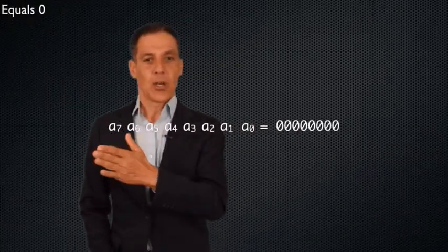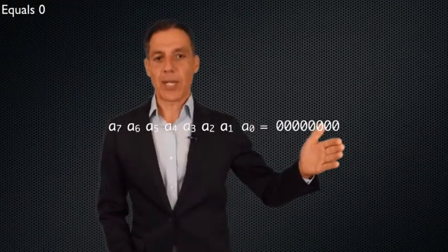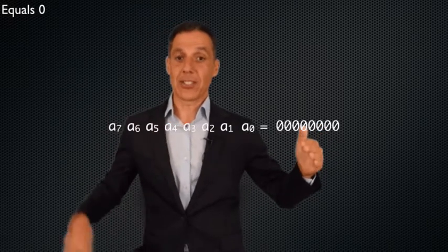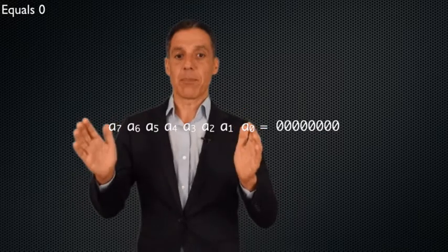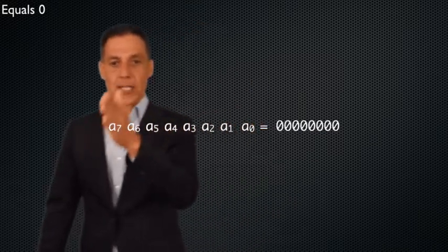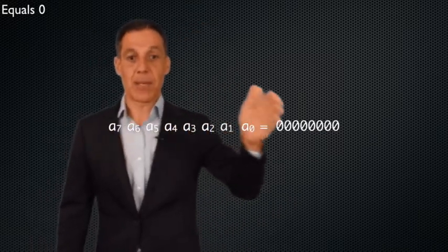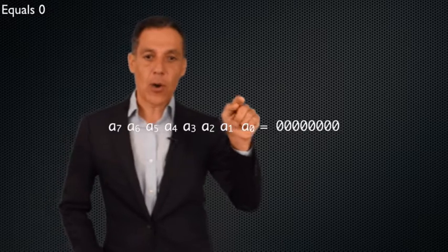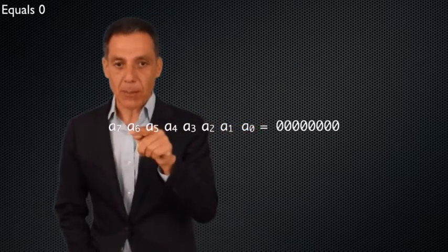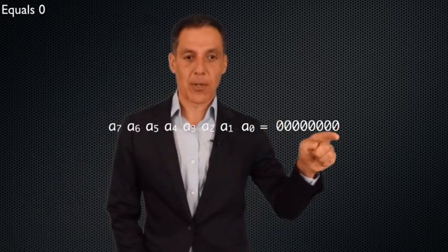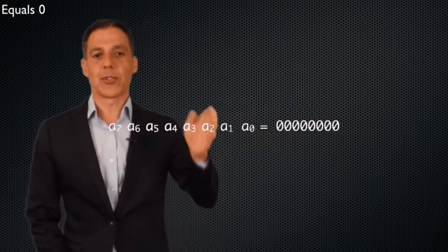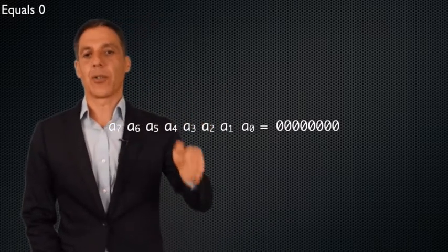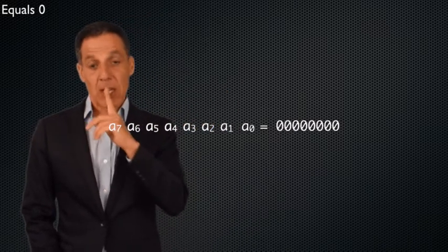First things first: what is our input-output? I have a single 8-bit binary number, which means I have 8 inputs corresponding to A0 to A7, the bit positions. And I want to know if this number is equal to zero — that is, all of the bits are zero: A0 is zero, A1 is zero, and so on and so forth.